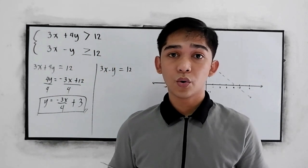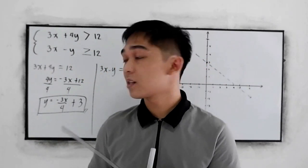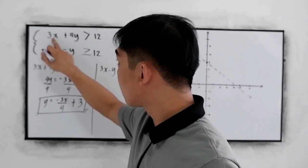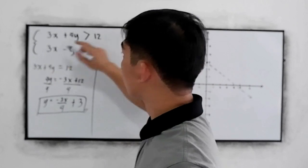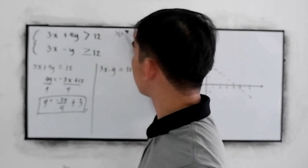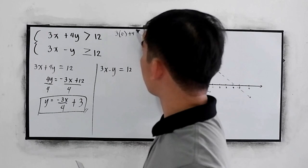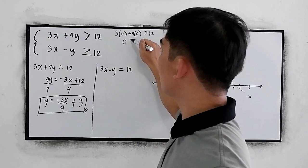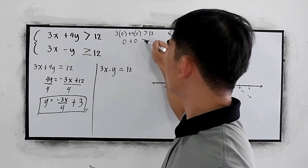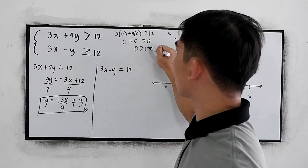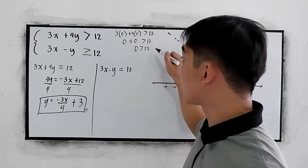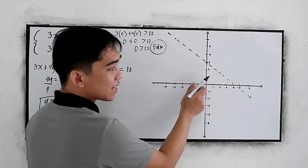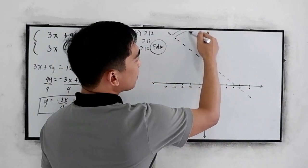This will be our line. Now, what part of the Cartesian plane are we going to shade — upper or lower? We test the origin: 3 times 0 plus 4 times 0 is greater than 12, so 0 is greater than 12. This is false. That means the origin is not included, so we shade the opposite region.